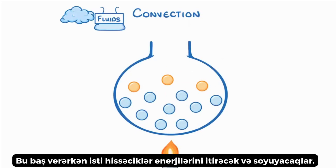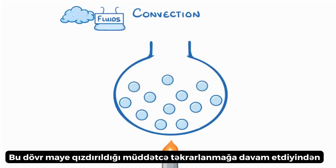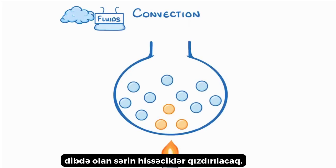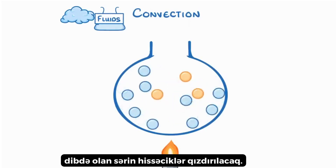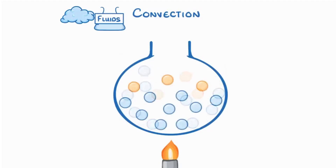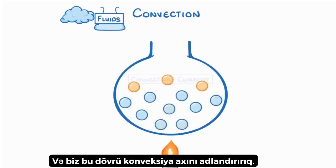Whilst this is happening, the hot particles would lose their energy and cool down, and the cool particles, now at the bottom, would heat up. Because of this, the cycle would keep on repeating for as long as the fluid was being heated. And we call this cycle a convection current.